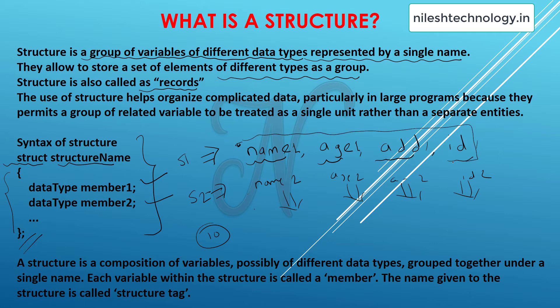Instead of using all these variables, we can create one group of these variables, give one name to that group, and use an array for that group. This way we can skip the repetition of variables — this is the main advantage of structure. A structure is a composition of variables, possibly of different data types, grouped together under a single name. Each variable within the structure is called a member, and the name given to the structure is called the structure tag.